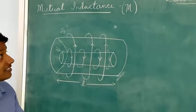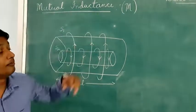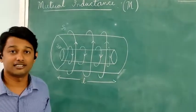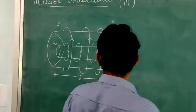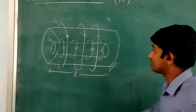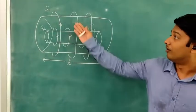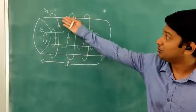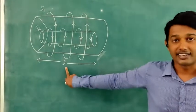Let us derive the expression for mutual inductance. We take two solenoids S1 and S2, both of length L.